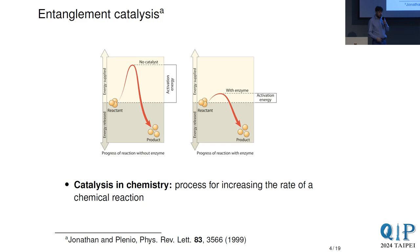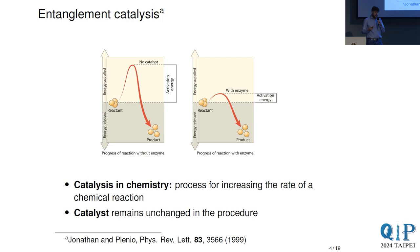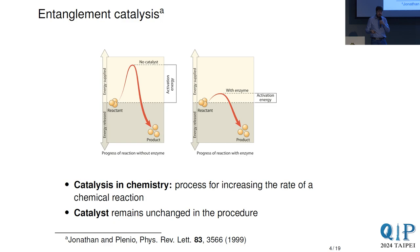Originally we know catalysis from chemistry, where it is a process for increasing the rate of a chemical reaction. A catalyst is a substance that remains unchanged in the procedure. You might have a chemical reaction where you need some activation energy to start it, and by adding a catalyst, ideally you would reuse the activation energy in such a way that the catalyst remains unchanged — so effectively you can reuse the catalyst infinitely many times in theory.